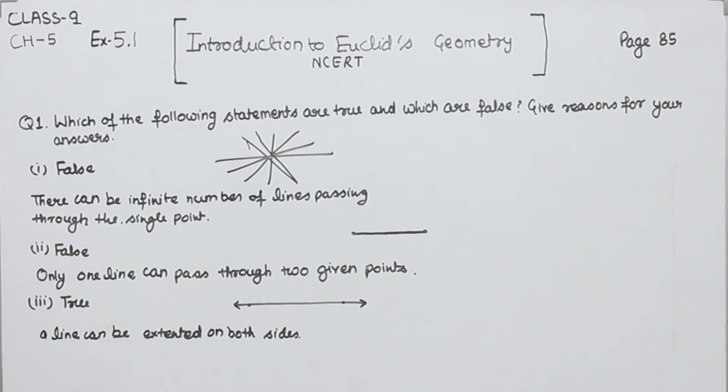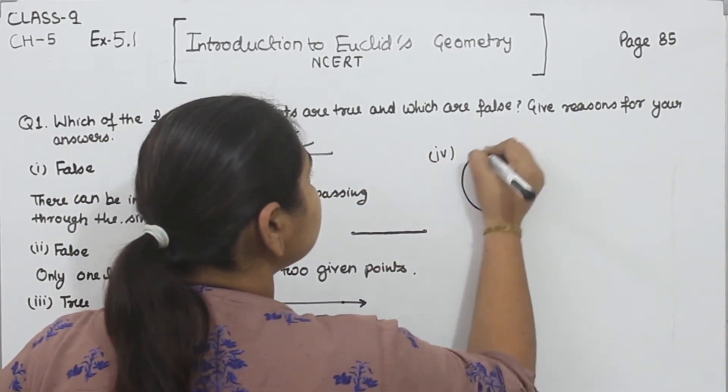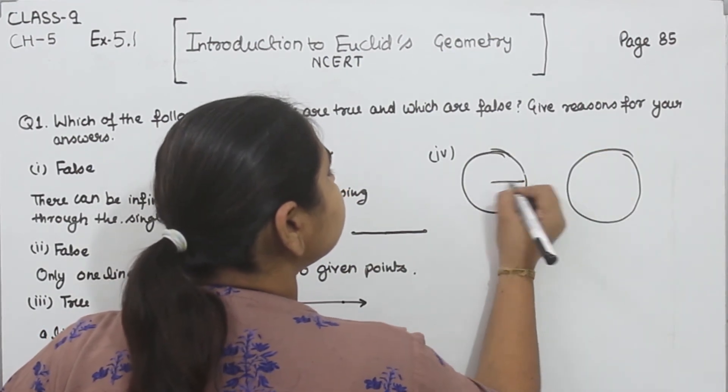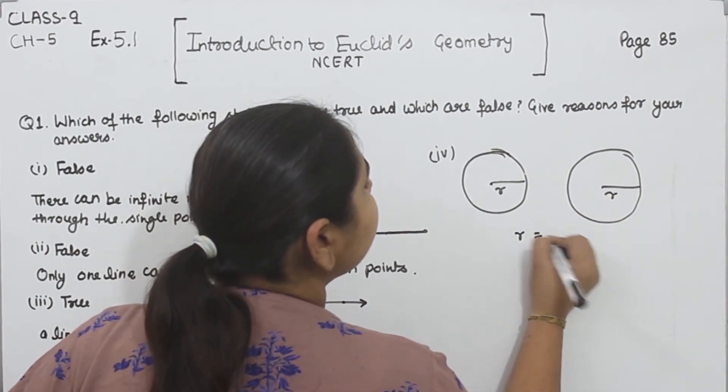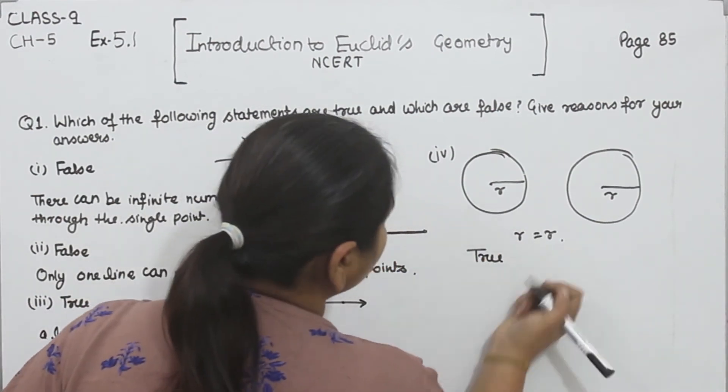Now, come to the fourth one. If two circles are equal, then their radius are equal. For example, these are the two circles. If they are equal to each other, the radius of both of them are equal. This statement is true.